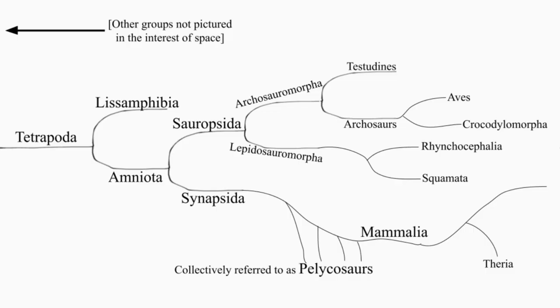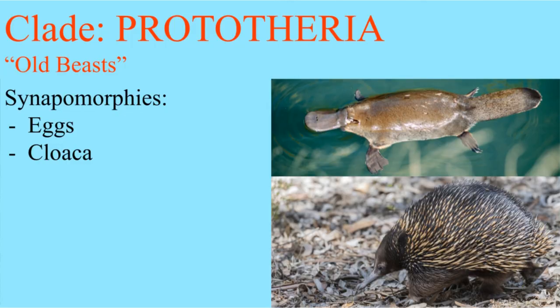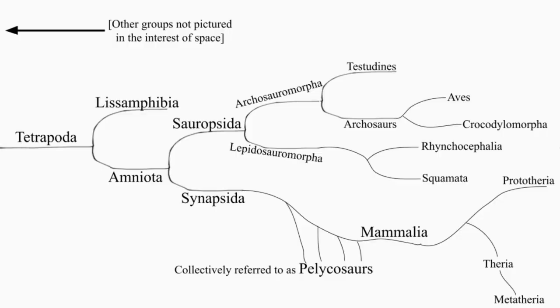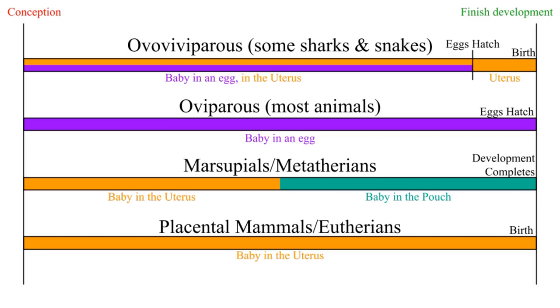Mammals divide into the beasts and the old beasts. The prototherians lay eggs and have one hole, hence the name, and the therians divide into the middle beasts and the good beasts. Metatherians shoot out the kid while it's still half-baked, eutherians do not, and they have a placenta which allows the kid to communicate with the mom while in utero.